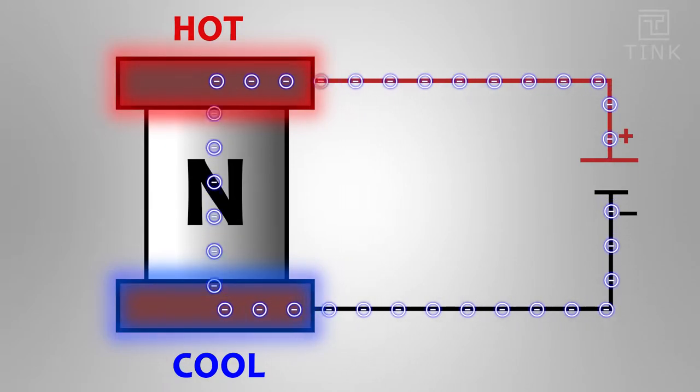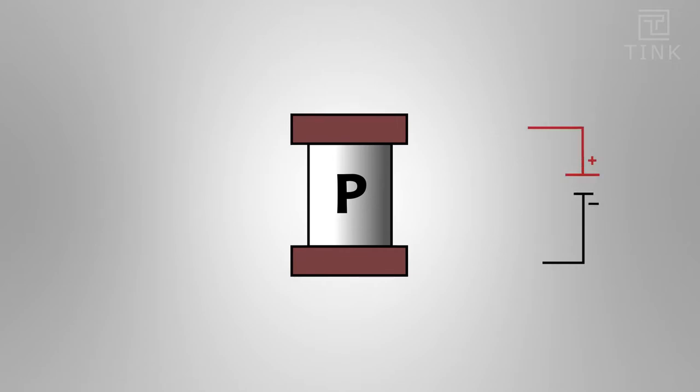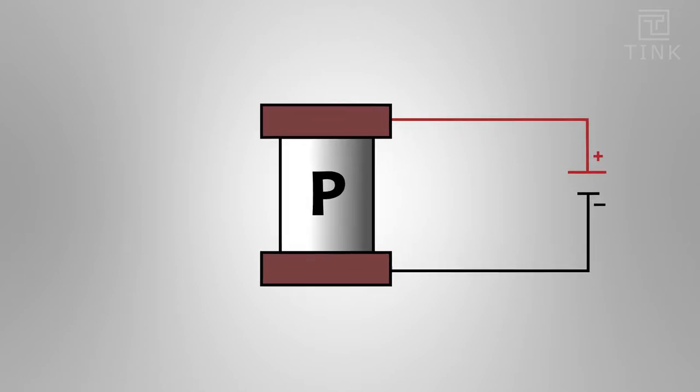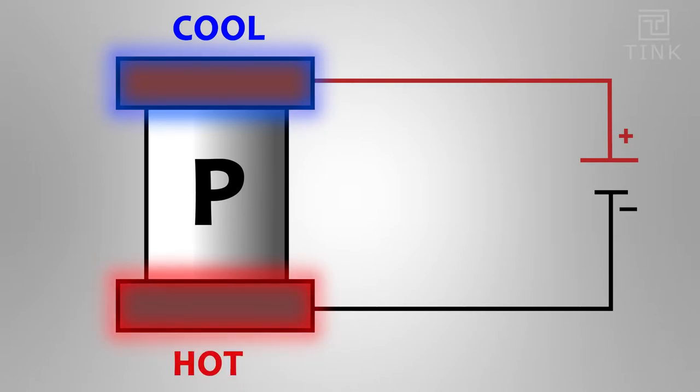Now let's take a look at a P type semiconductor. For a P type semiconductor the majority charge carriers are holes which are positively charged. Holes do the opposite. So obviously the junction at the positive side becomes more chill and the next junction becomes hot.